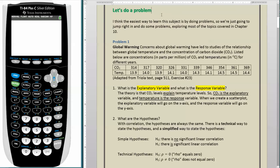So let's do a problem. I think the easiest way to learn this subject is by doing problems, so we're just going to jump right in, exploring most of the topics covered in Chapter 10 of the Triola textbook. Here you see problem 1. Global warming, that's the title of the problem.